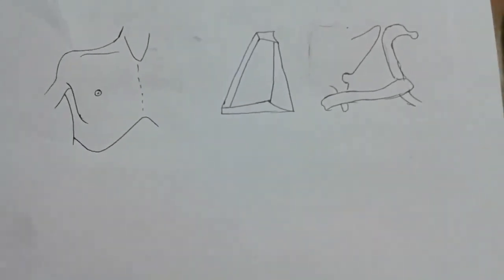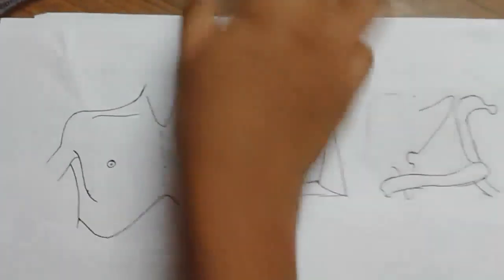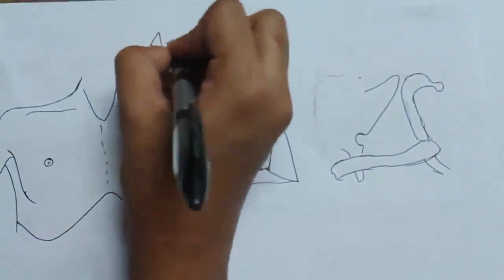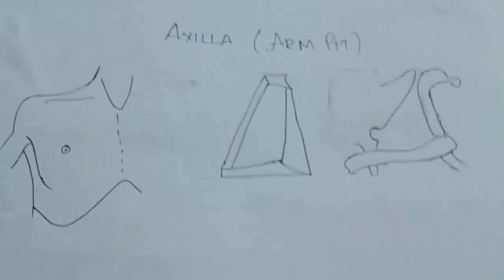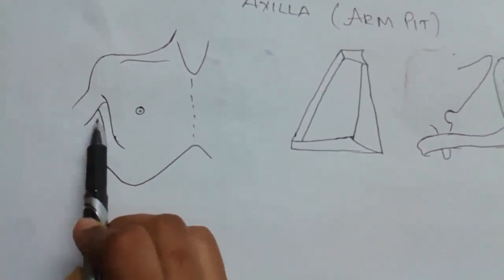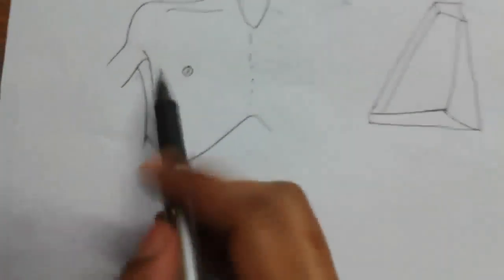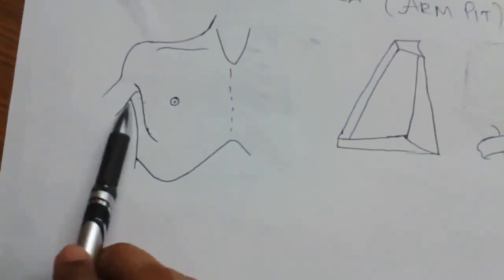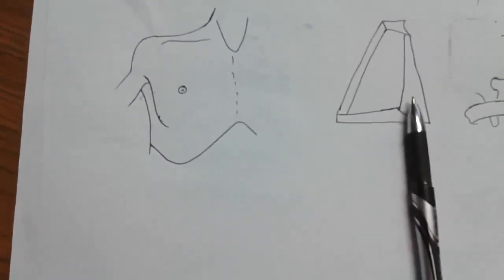In this lecture, I'm going to explain the axilla, also called the armpit. The axilla is a fat-filled pyramidal space present in the upper limb and the side of the chest — the space between the arm and the chest wall.